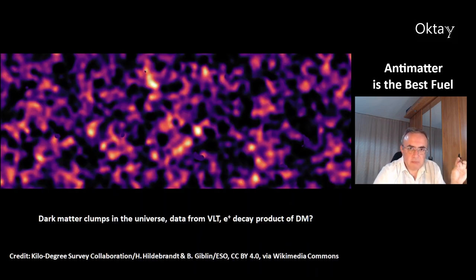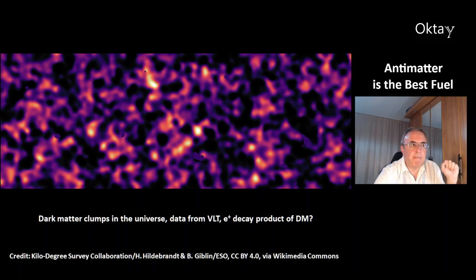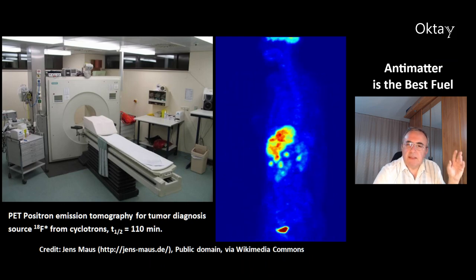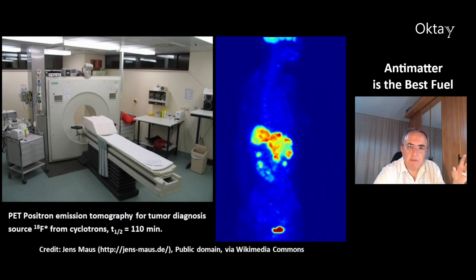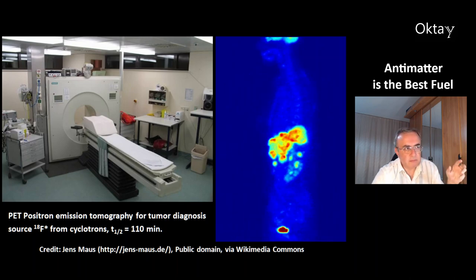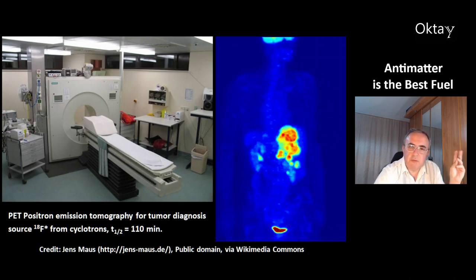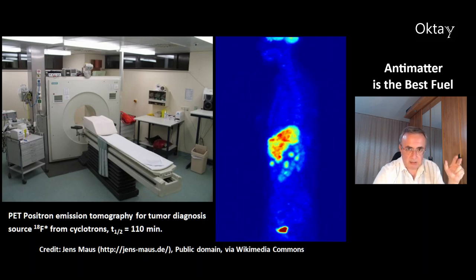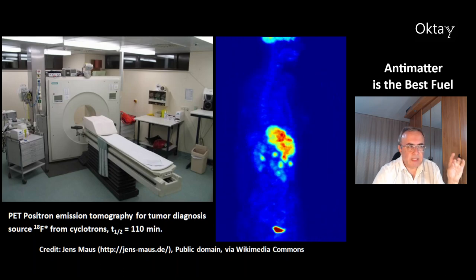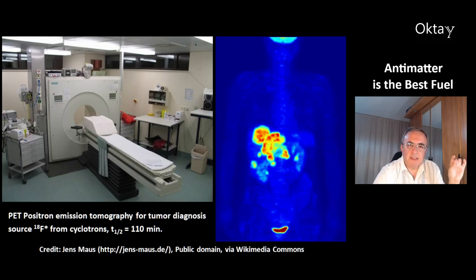This is a picture of dark matter clumps in the universe, made from data from the Very Large Telescope. The positron could theoretically be a decay product of dark matter. This is the PET — the positron emission tomography — for tumor diagnosis, a very important application for positrons. You can use the isotope fluorine-18 as a source for positrons, which can be produced in a cyclotron. Fluorine-18 has a half-life of 110 minutes.